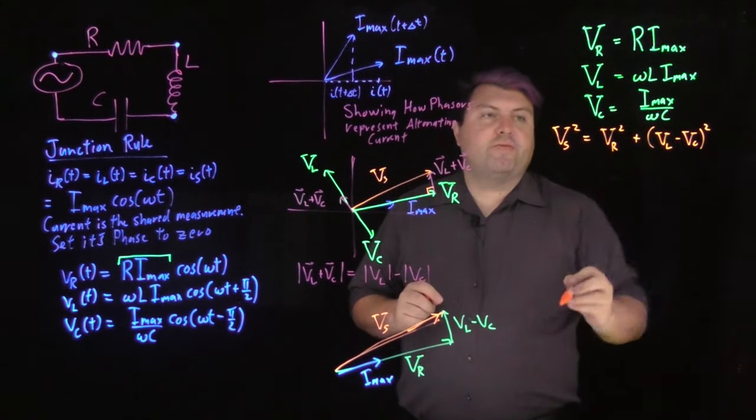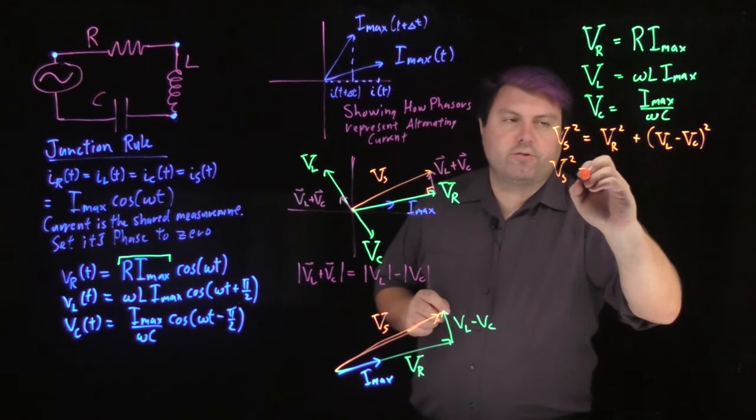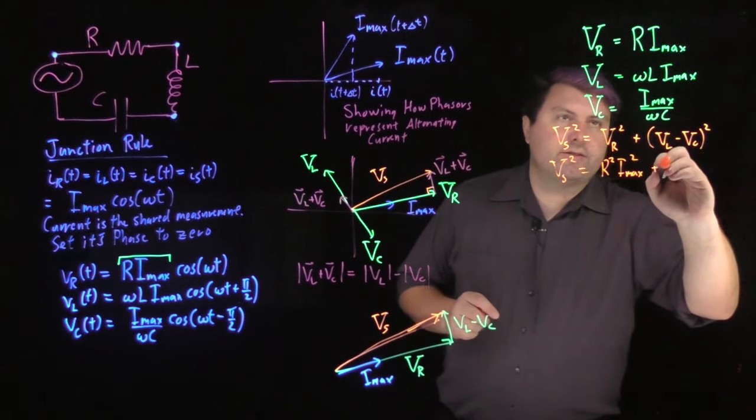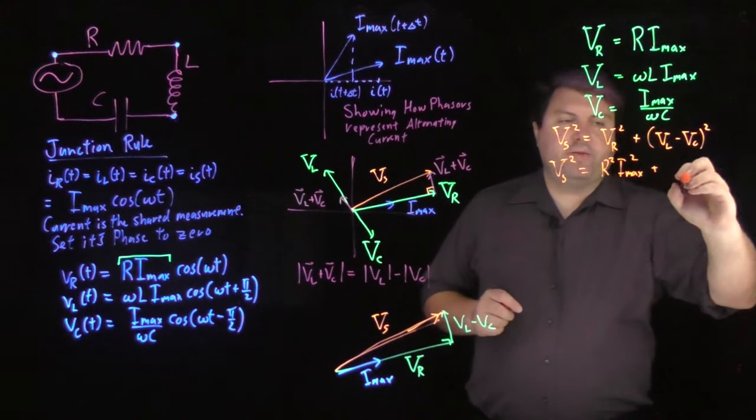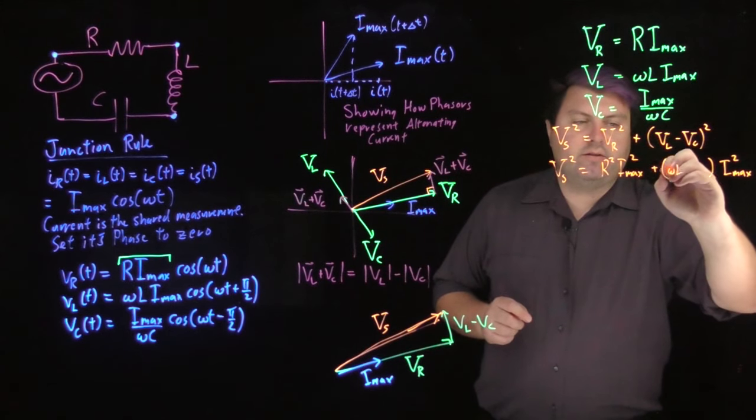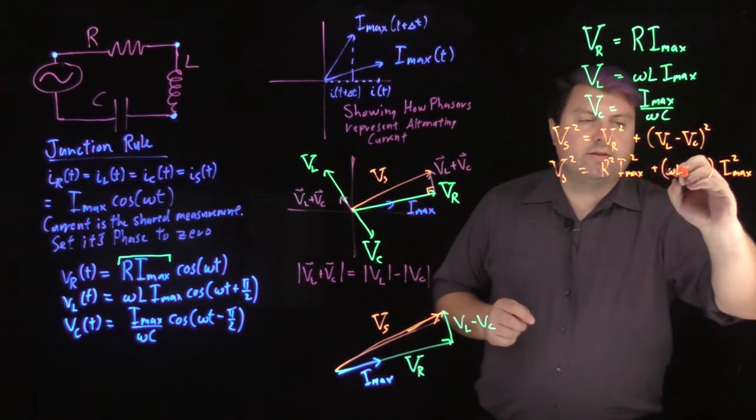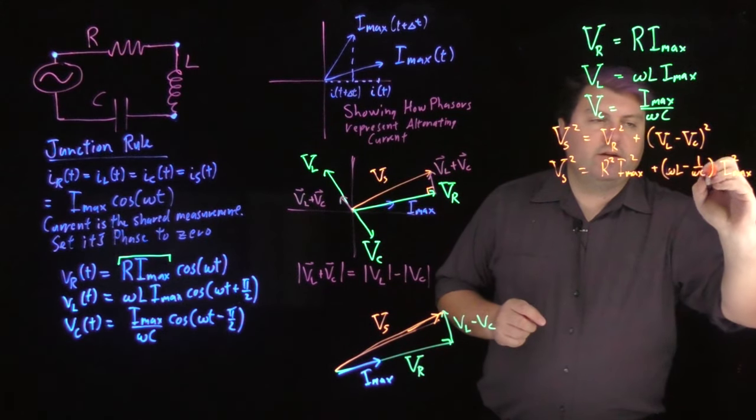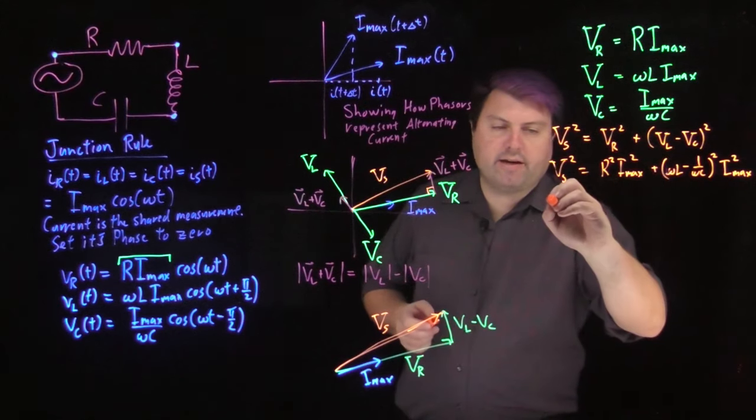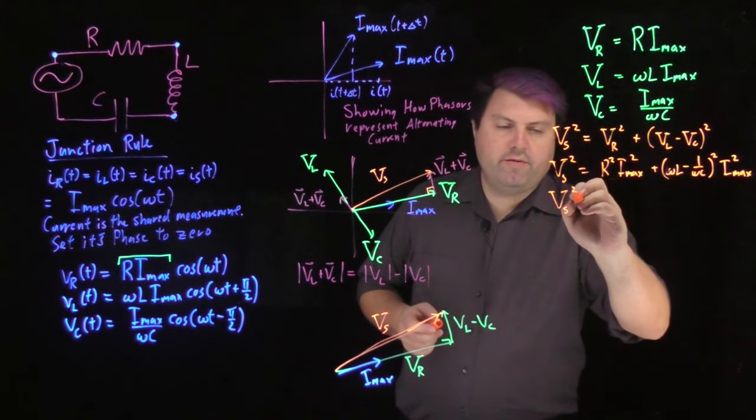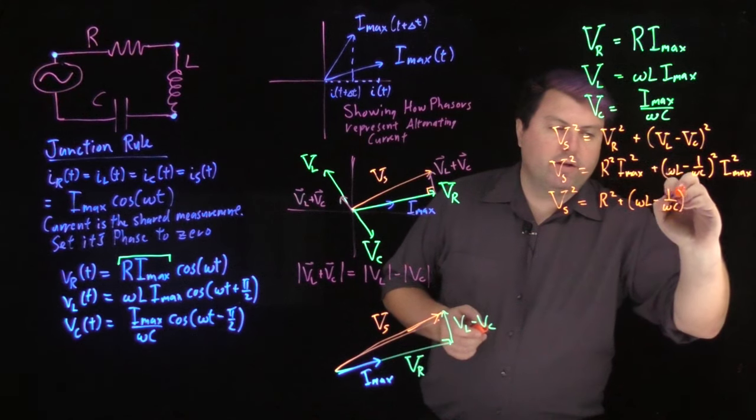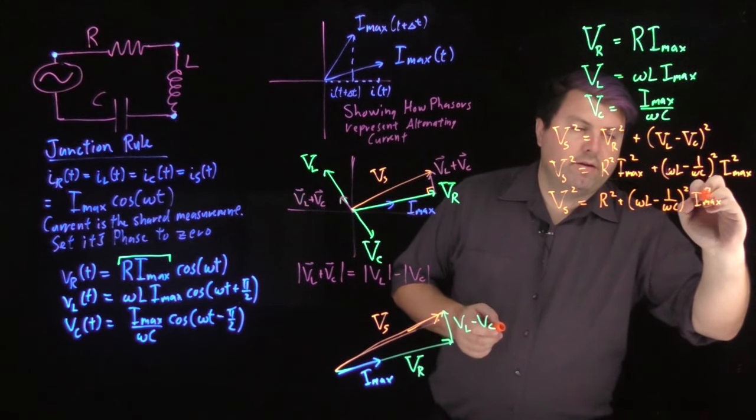But now we can plug in our V_Ls, V_Rs, and V_Cs. And so we have V sub source squared is equal to R squared I_max squared plus, and I have an I_max for both of these, so I'm going to factor that out just to make my life a tiny bit easier. And so I have omega L minus 1 over omega C quantity squared. So I still have this I_max squared, I still have this I_max squared, so I in fact can factor the I_max squared out even more. And then I will get R squared plus omega L minus 1 over omega C quantity squared I_max squared.